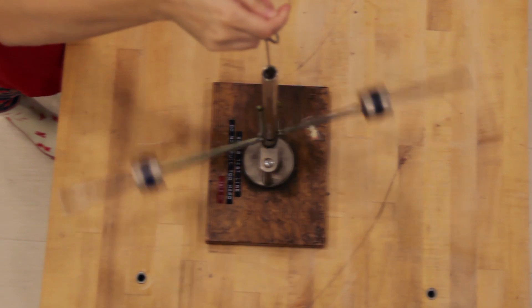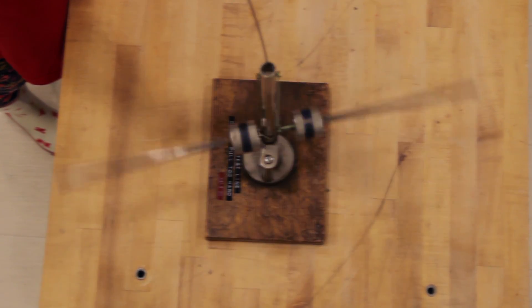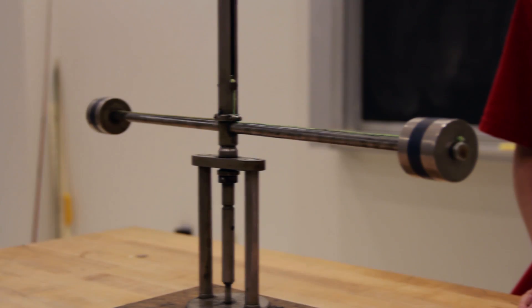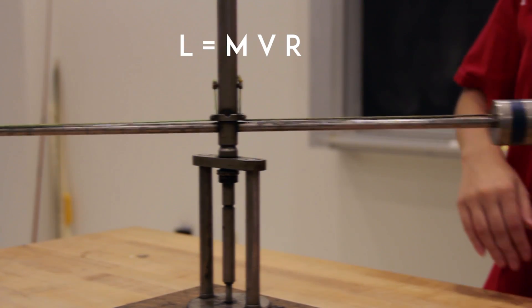Remember that angular momentum is a conserved quantity. Thus, the angular momentum of the masses before we pull the cord is the same as that after. Initially, that value is L equals M times V times R for each mass.